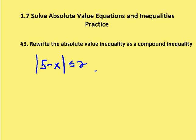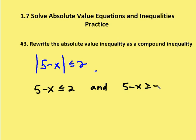I'm going to go ahead and rewrite this as 5 minus x is less than or equal to 2, and then write 'and.' Then 5 minus x — I'm going to switch the direction of the symbol and change the sign — is greater than or equal to negative 2. So remember, it's going to be less than the largest value and greater than the smallest value. So I've rewritten my two inequalities.